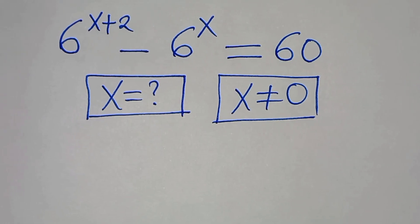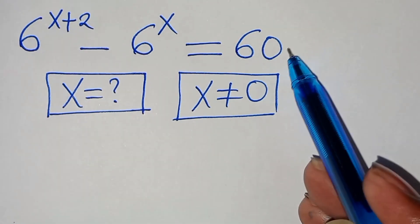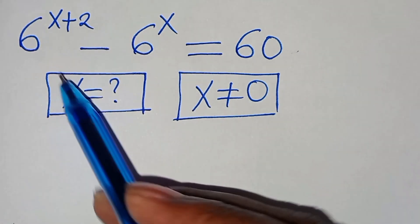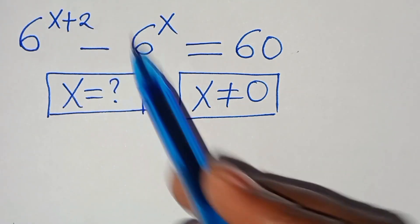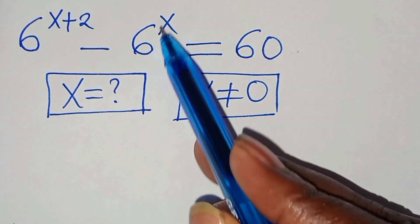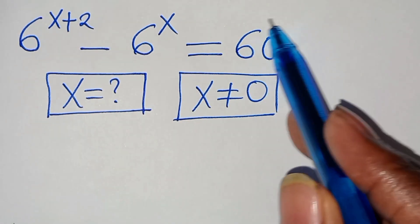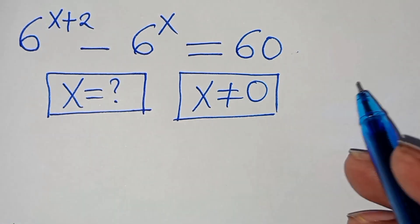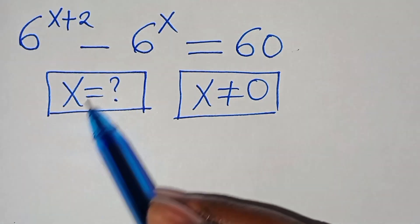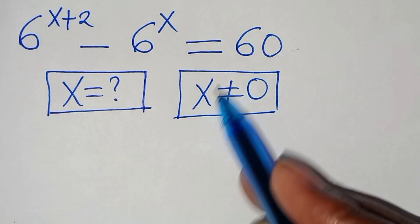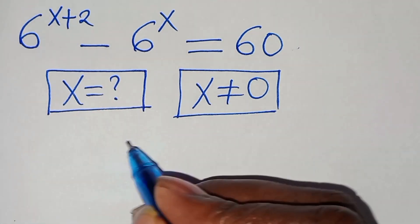Hello everyone, you are welcome to solve this nice exponential equation, which is 6 to the power of x plus 2, minus 6 to the power of x. This is equal to 60. So what is the value of x, given that x is not equal to 0?